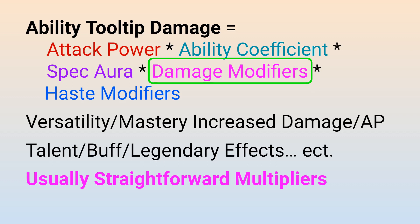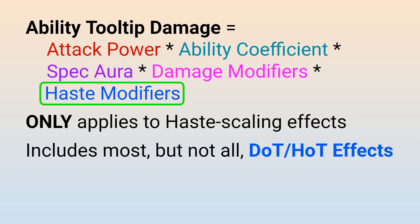Finally, I have a haste modifier if you are calculating the ability damage of a haste scaling effect. For example, most damage or healing over time effects in the game will tick faster with more haste, so 20% more haste would result in 20% more damage or healing. That being said, there are plenty of damage or healing over time effects that do not scale with haste, and Death Knights in particular have a lot of damage over time effects that do not scale with haste.